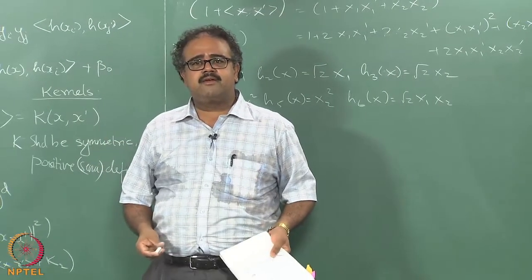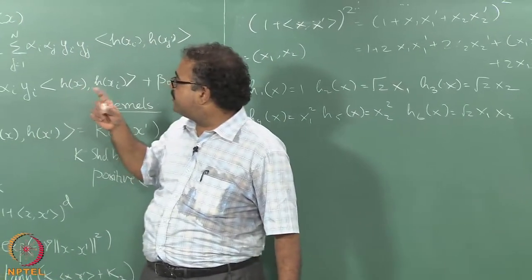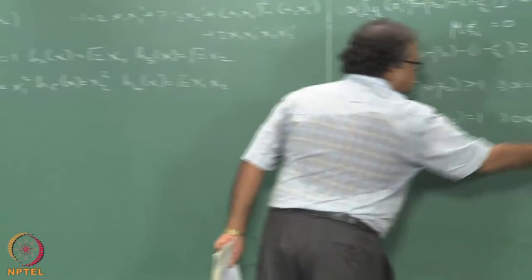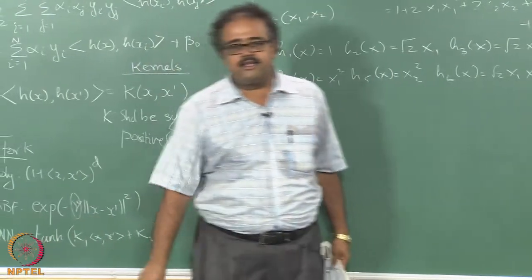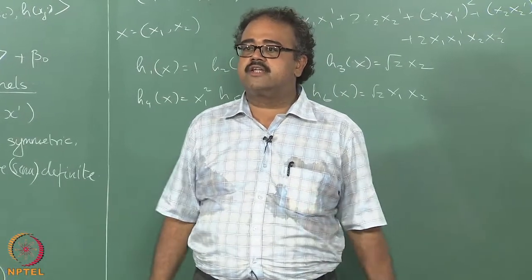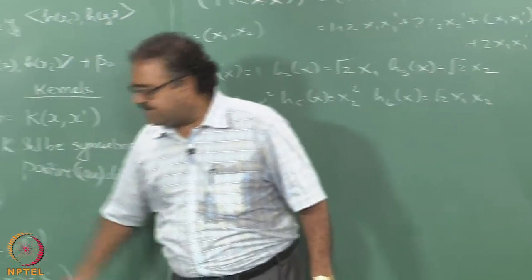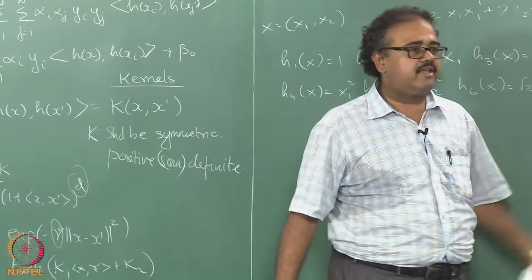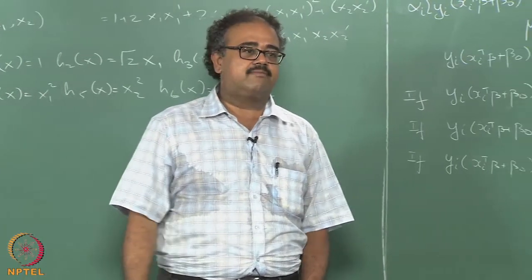For most RBF kernels you would have tuned two parameters: one is C, which we already saw — that is essentially how much penalty you are giving — and the other is gamma, which is a width parameter for your Gaussian controlling how wide it is. For polynomial kernels you have D and C, and for sigmoidal kernels you have constants kappa_1, kappa_2, and C. This form of defining a support vector machine is called C-SVM.